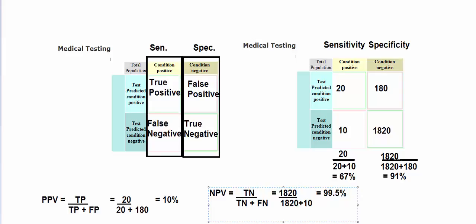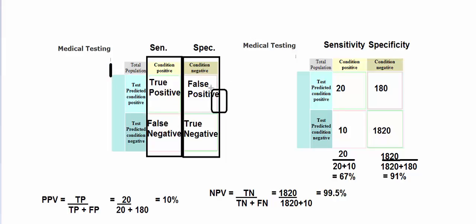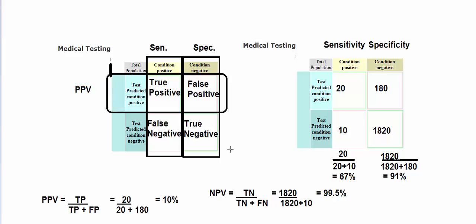To review: for PPV we looked at true positives over all positives. And for NPV, negative predictive value, we looked at true negatives over all negatives.